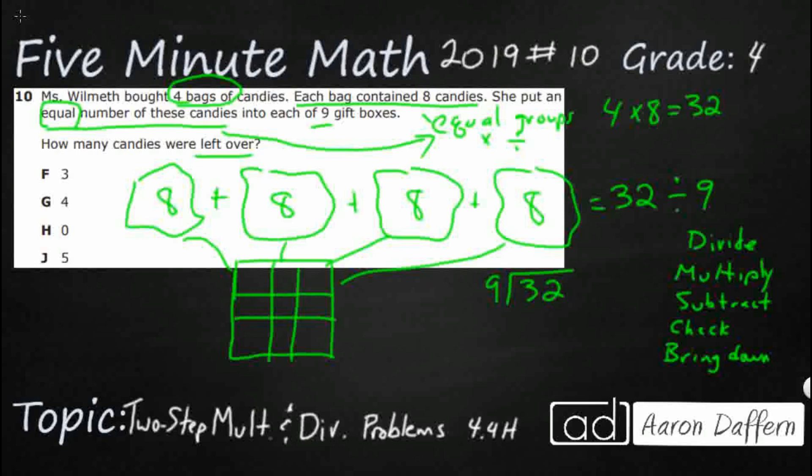Well, nine times one is nine. Nine times two is 18. Nine times three is 27. Nine times four is 36. So 36 is too much. So it's going to have to be three. Nine goes into 32 only three times without going over.